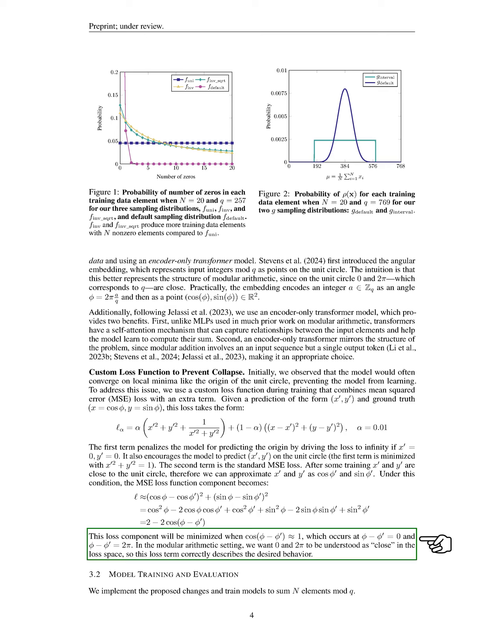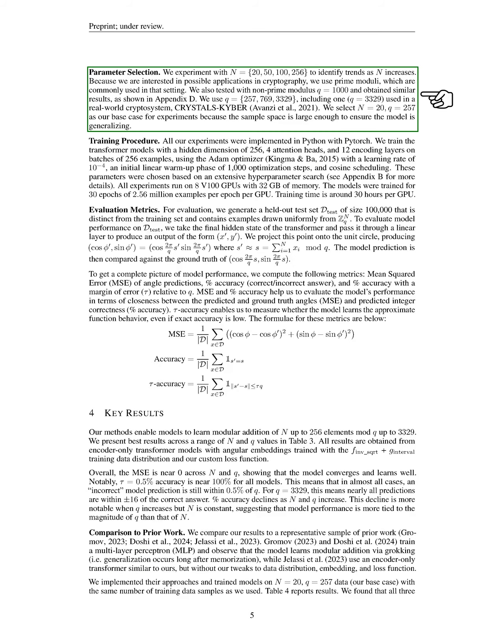Section: Model training and evaluation. In this section, we implement the proposed changes and train models to sum a number of elements modulo a given value. For parameter selection, we experiment with different sizes of elements, specifically 20, 50, 100, and 256, to observe trends as the number of elements increases.